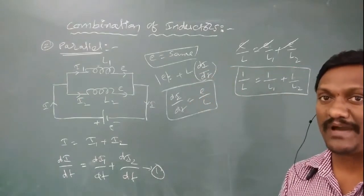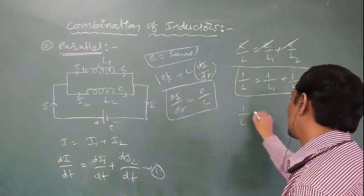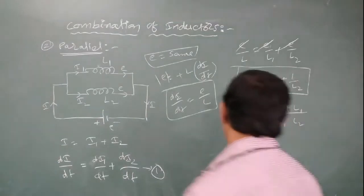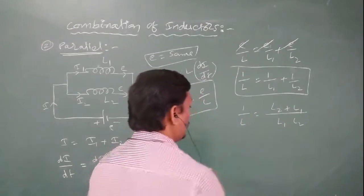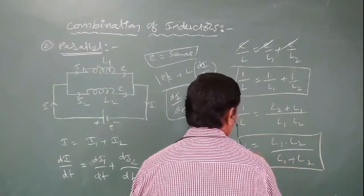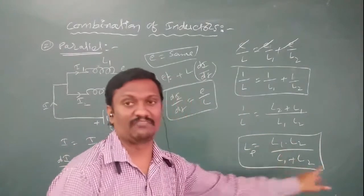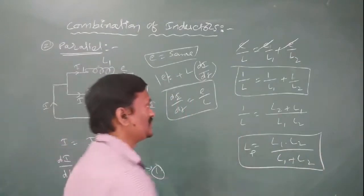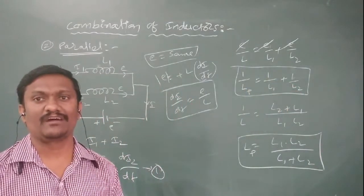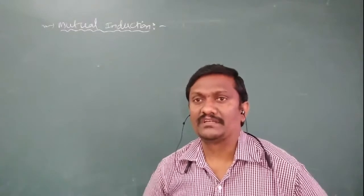Similarly, for three inductors joined in parallel, the effective inductance is 1/L equals 1/L1 plus 1/L2 plus 1/L3. Simplifying the two-inductor case: taking LCM as L1 times L2, the effective inductance L equals L1 times L2 divided by L1 plus L2. So the effective inductance for two inductors in parallel is L1L2 divided by L1 plus L2. That completes the parallel combination of inductors. The next concept is mutual induction.